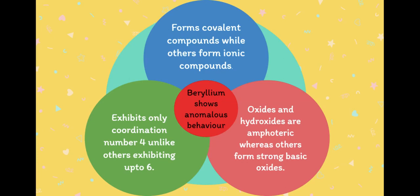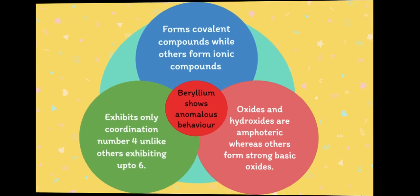Beryllium oxide and beryllium hydroxide are amphoteric in nature, while the other elements form strong basic oxides.